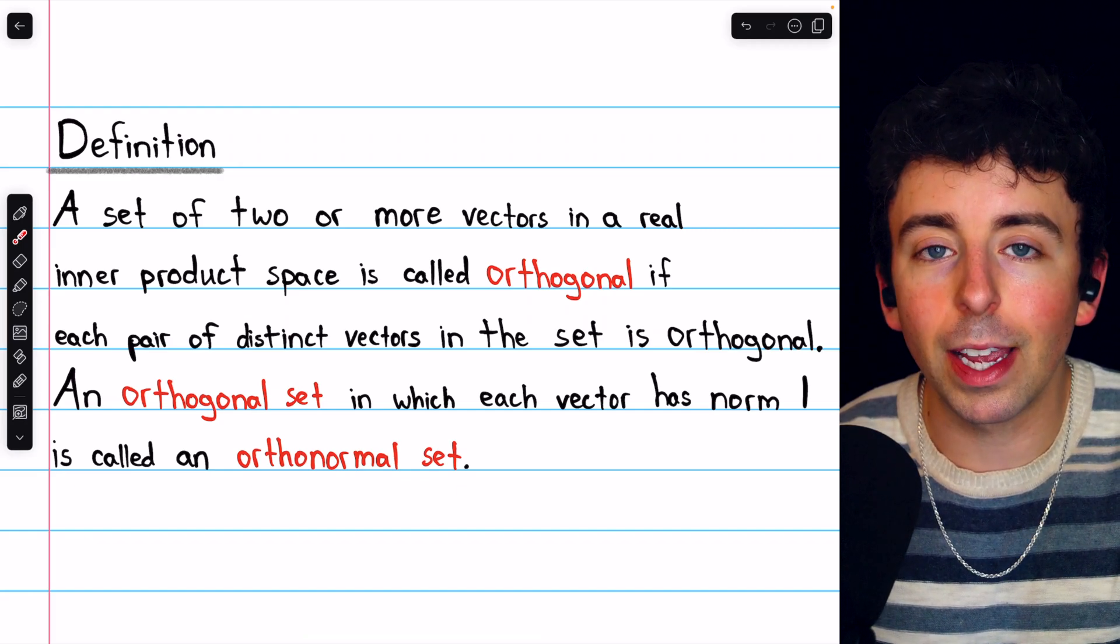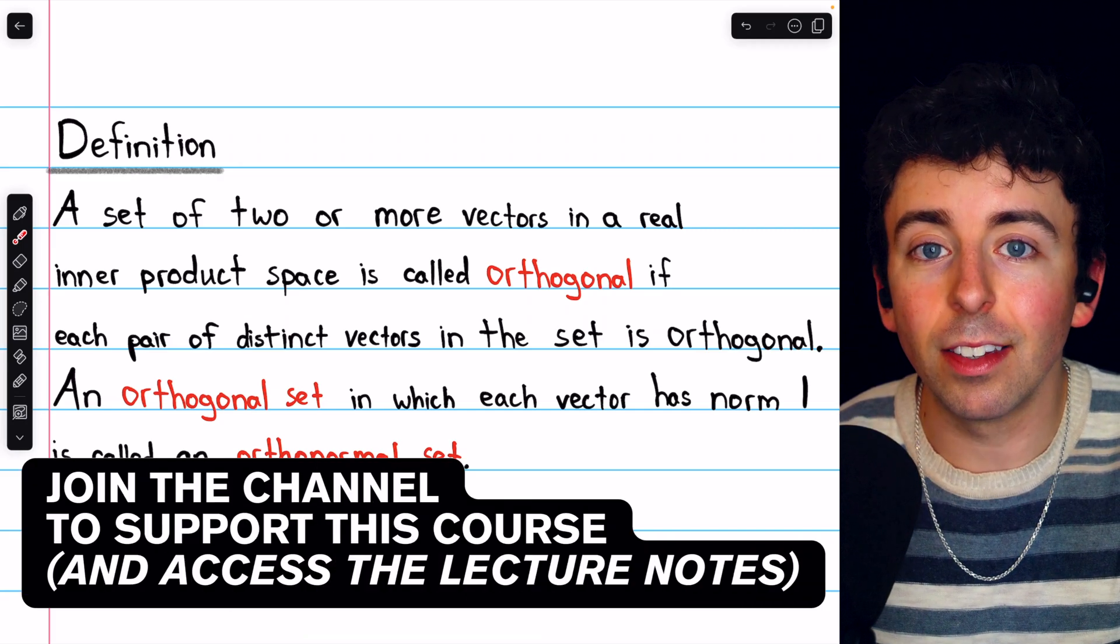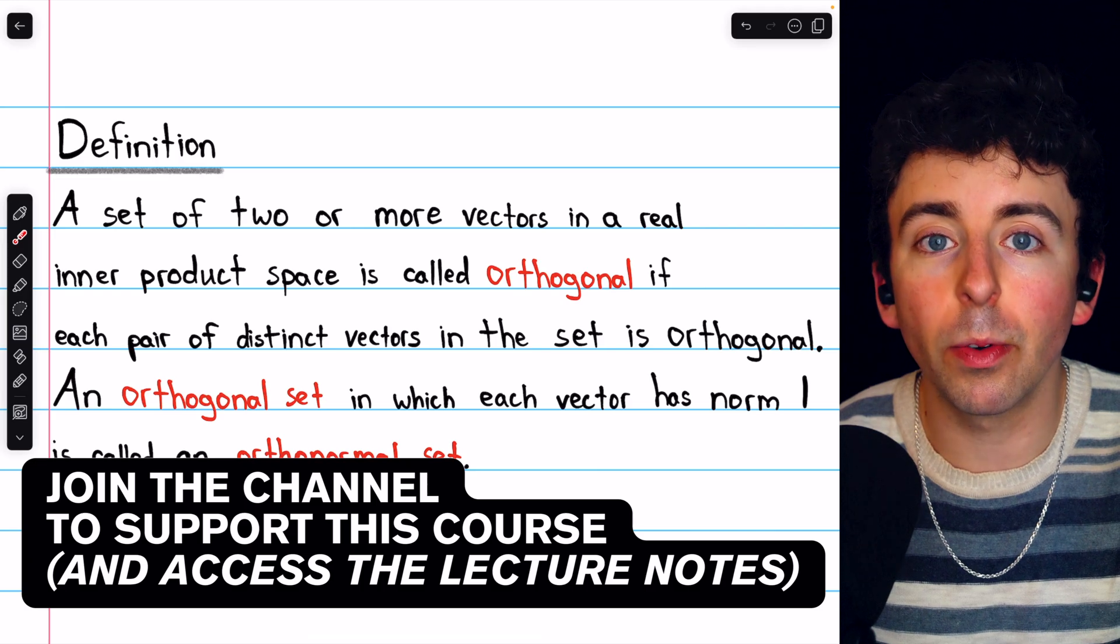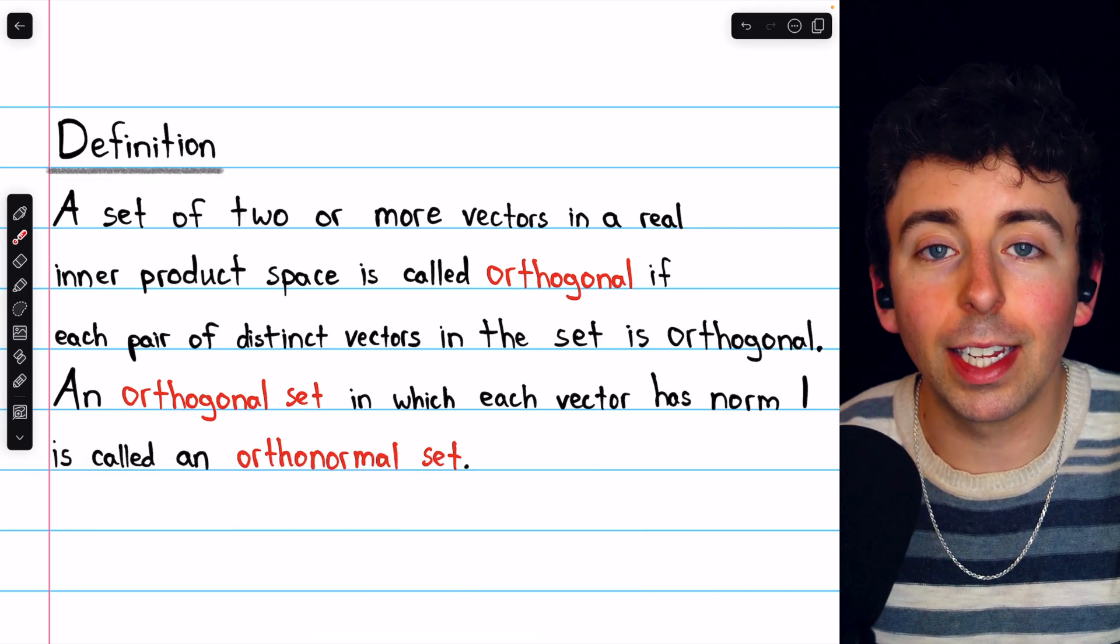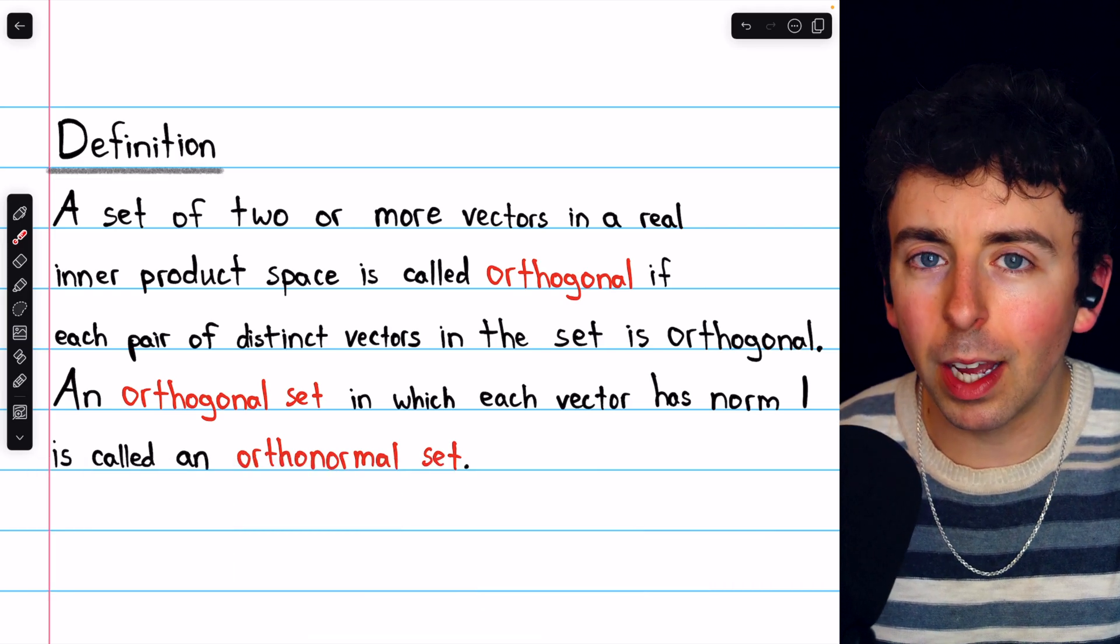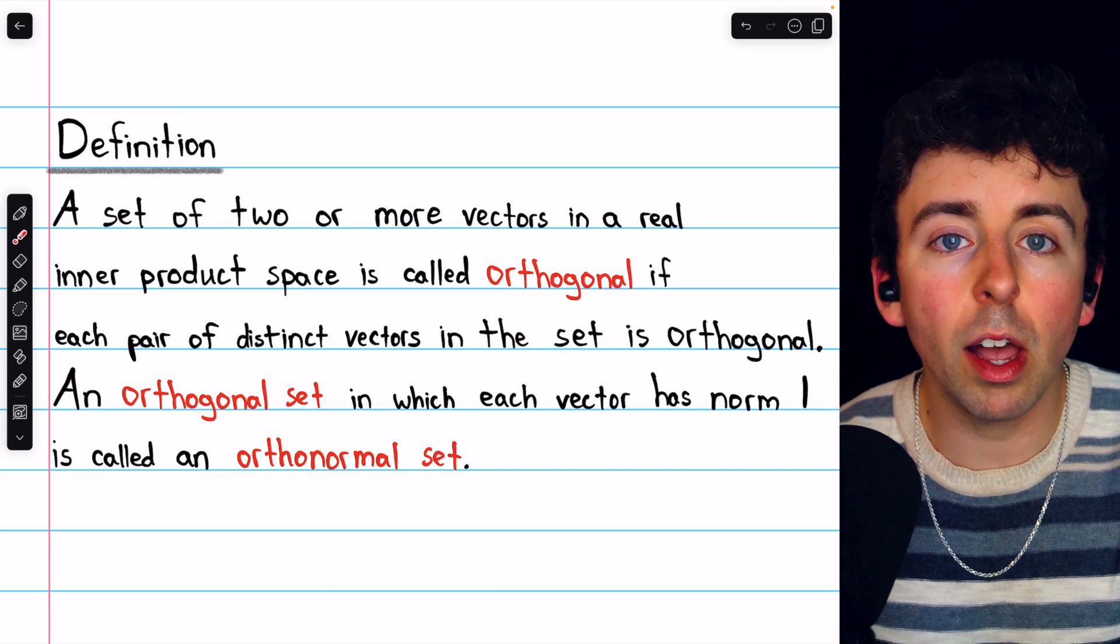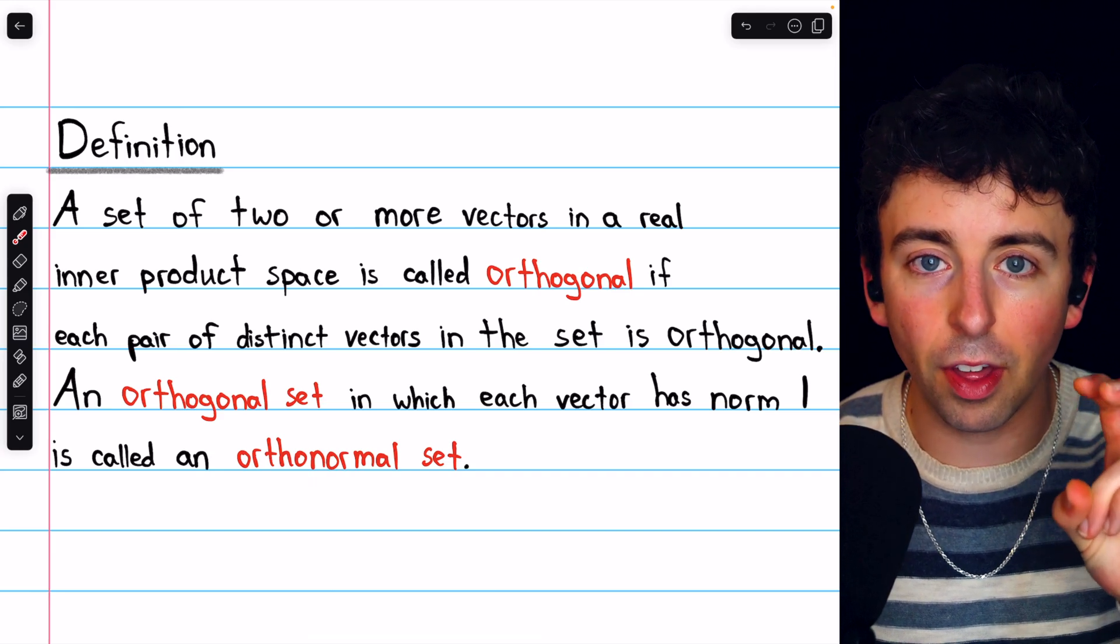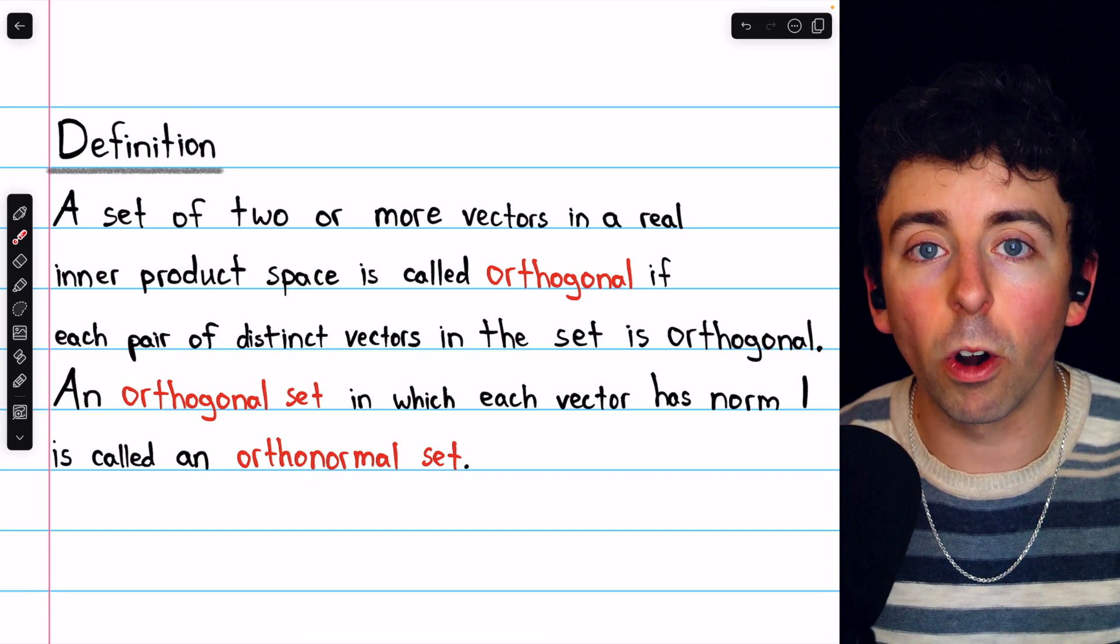We've previously seen how in a vector space there are many different bases we could choose to construct it with, and the same is true in an inner product space. But in an inner product space, we also have the idea of orthogonality and the norm of a vector.